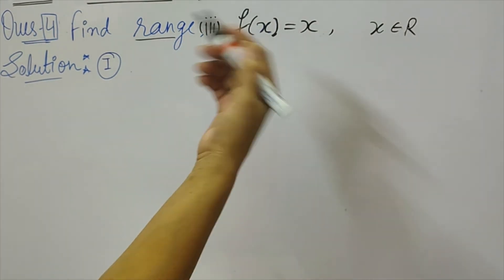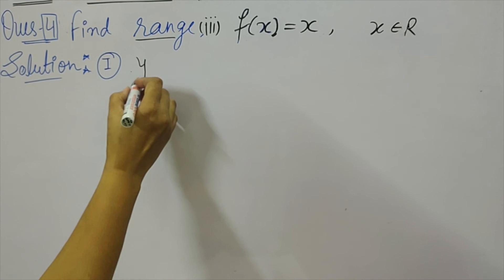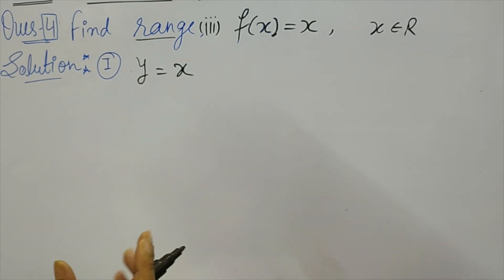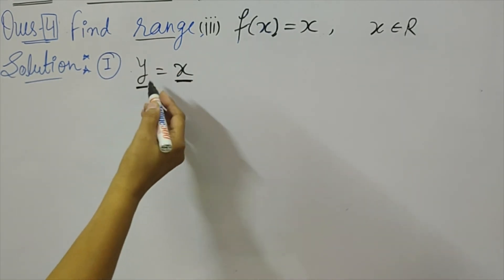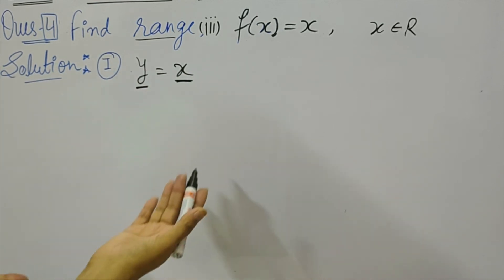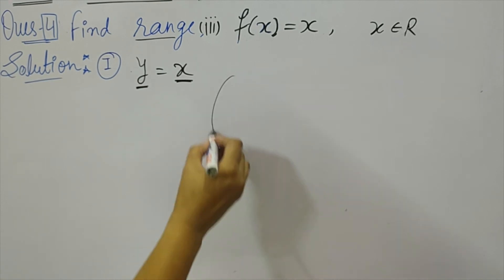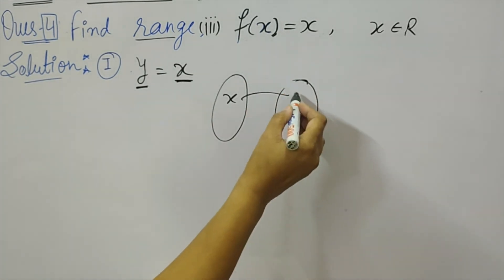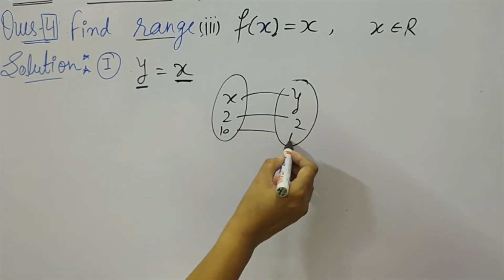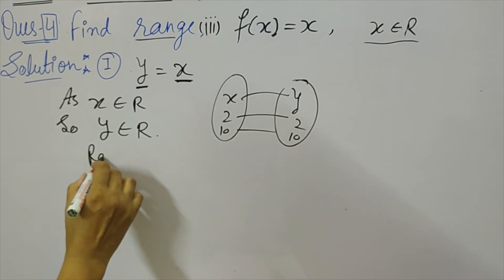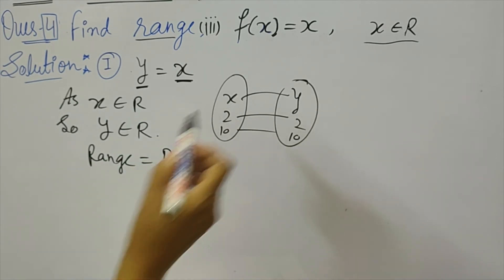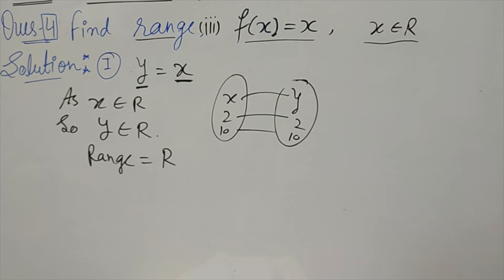For the third part, f(x) = x, which is quite simple. Setting y = x, it is clear that y takes all the values x takes — the output equals the input. For input 2 you get 2, for input 10 you get 10. Since x is any real number, y is also any real number, so the range is ℝ. This function is called the identity function.